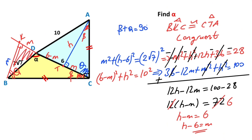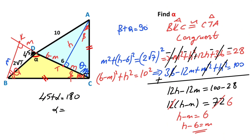So h minus 6 equals m. Notice that we get an isosceles right triangle, so here must be equal to 45 degrees. We know that straight angles equal 180 degrees, so 45 plus alpha equals 180 degrees. Therefore alpha is going to be 135 degrees.